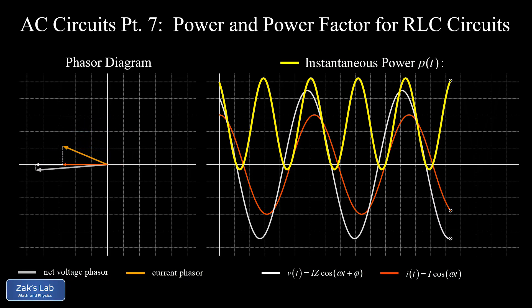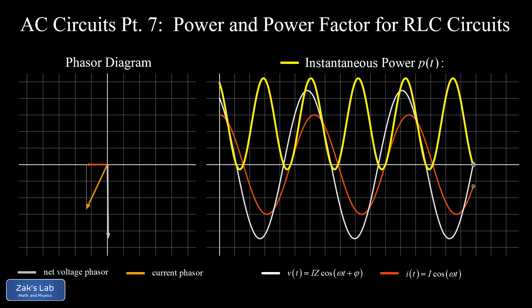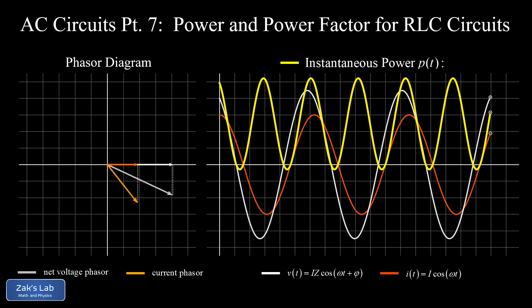The other interesting feature is that the power function can actually go negative, meaning energy is flowing back into the source momentarily, even though our average power is positive — meaning it flows from the source to the circuit. We'll get into the math in a minute, but first we need a quick review of what we know about the RLC circuit.